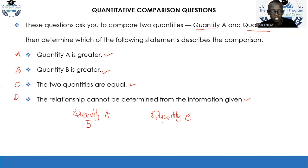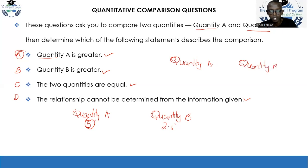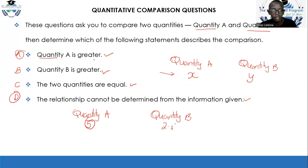For a simple example: if quantity A is 5 and quantity B is 2.5, you would select option A because quantity A is greater. But if quantity A is X and quantity B is Y and you're not given any other context, you would go with option D — you cannot determine the relationship because there is no extra information. Quantity B could be greater, or the quantities could be equal, depending on the values.